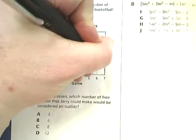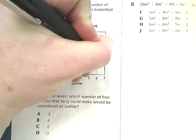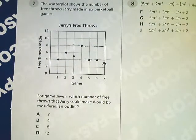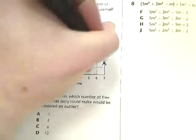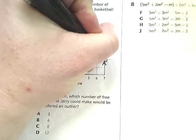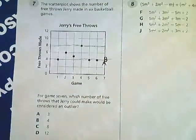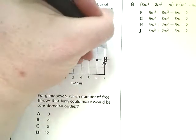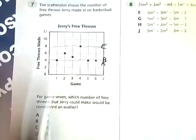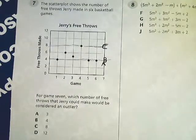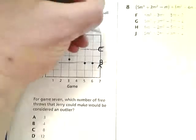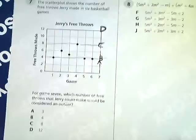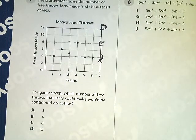A is 3, so that's right here — that's outside my line, but not way off, so probably not. B is here — that's not way off either. C is here — that's kind of at the top. And D is 12, so D would be way up here. As you can tell, D does not play well with others, so it is the outlier.